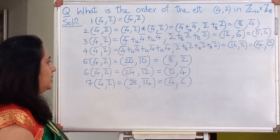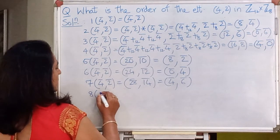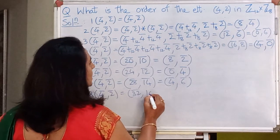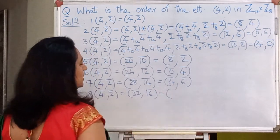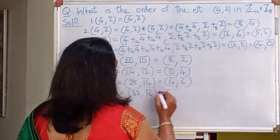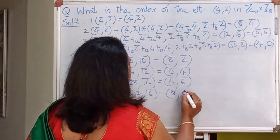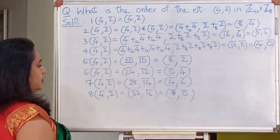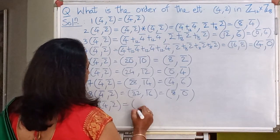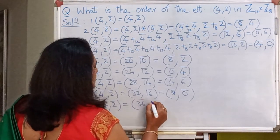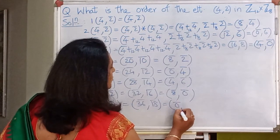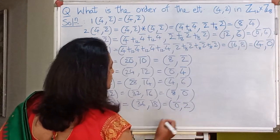8×(4̄,2̄) = (32̄,16̄). Now 32−24=8 and 16̄ in Z8 is 0̄, so (8̄,0̄). And 9×(4̄,2̄) = (36̄,18̄). 36̄ in Z12 is 0̄, and 18−16=2, giving (0̄,2̄).